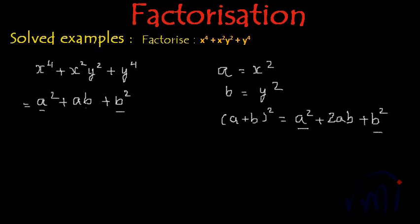So if I add and subtract ab from this, what will we get? We will get a square plus 2ab plus b square minus ab.